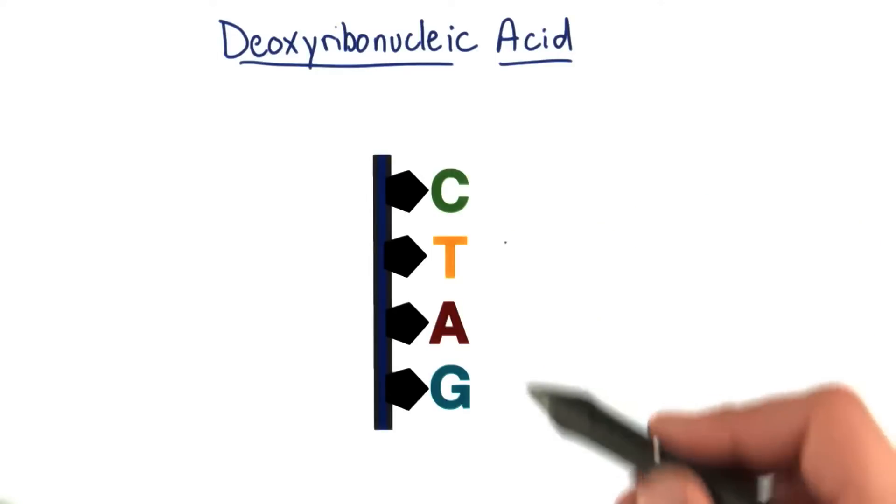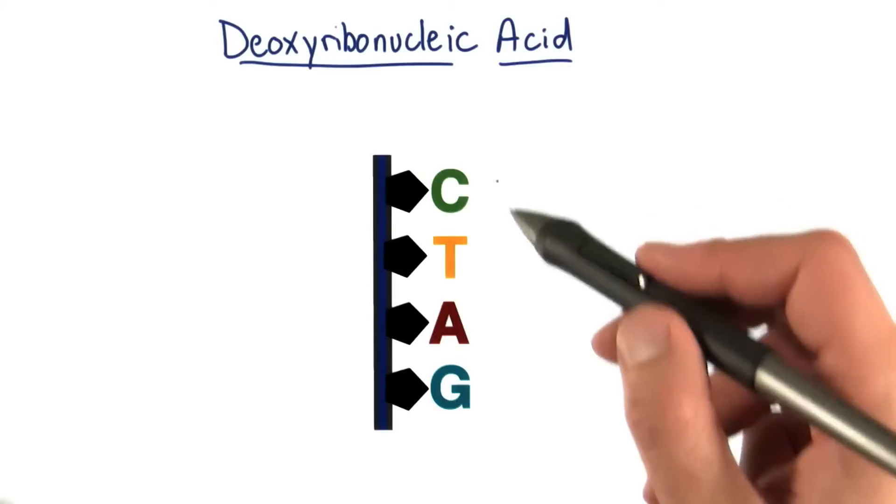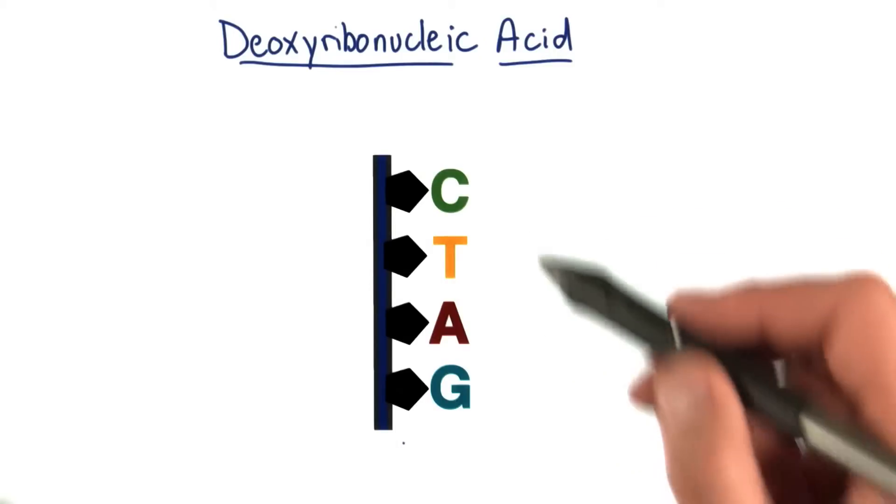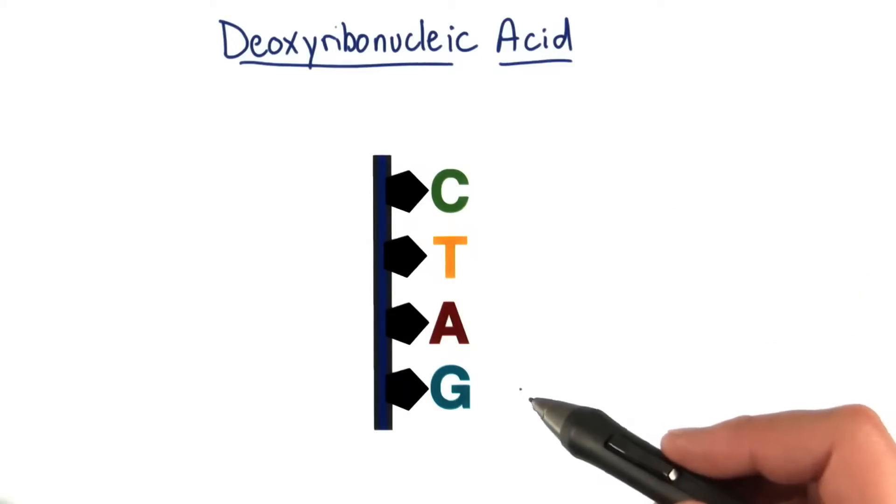These four letters of DNA represent the alphabet of your genetic code: C, T, A, and G.